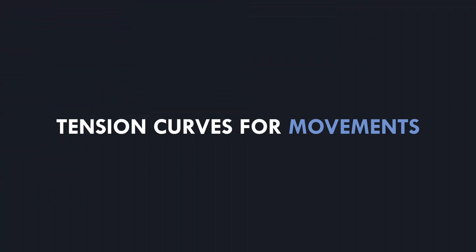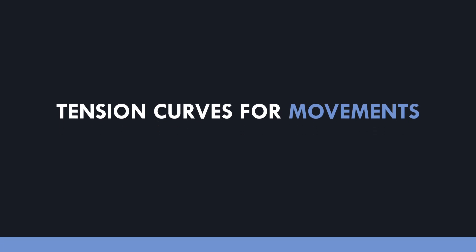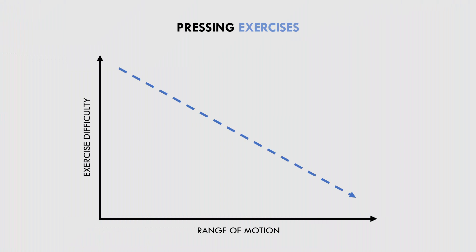So what tension curves do different movements have? Each exercise has a different tension curve based on the factors discussed. However, we can group exercises into general movement categories that all have similar tension curves. Pressing exercises generally have an ascending tension curve, meaning we are weaker at the start of the lift and stronger at the end. For example, during a bench press, we are weaker at the bottom portion and stronger at the top portion in lockout. Most standard pressing exercises naturally have this same tension curve.